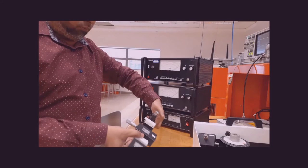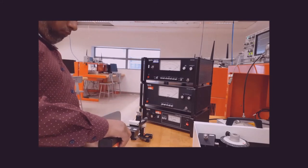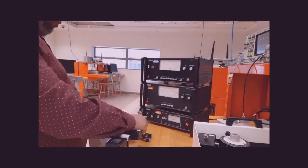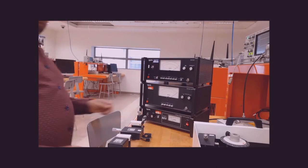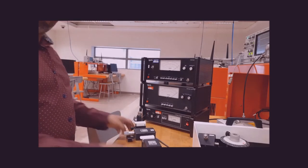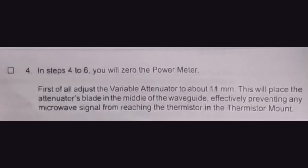We need to place this setup on the support. Make sure your variable attenuator blade is all the way in. Now we have to set the DC voltage to 8.5 volts. Connect the gun oscillator to the gun oscillator power supply and turn the power supply on. If you put the variable attenuator at 11 mm, no signal can pass through to the thermistor — all signals will be blocked by the variable attenuator.